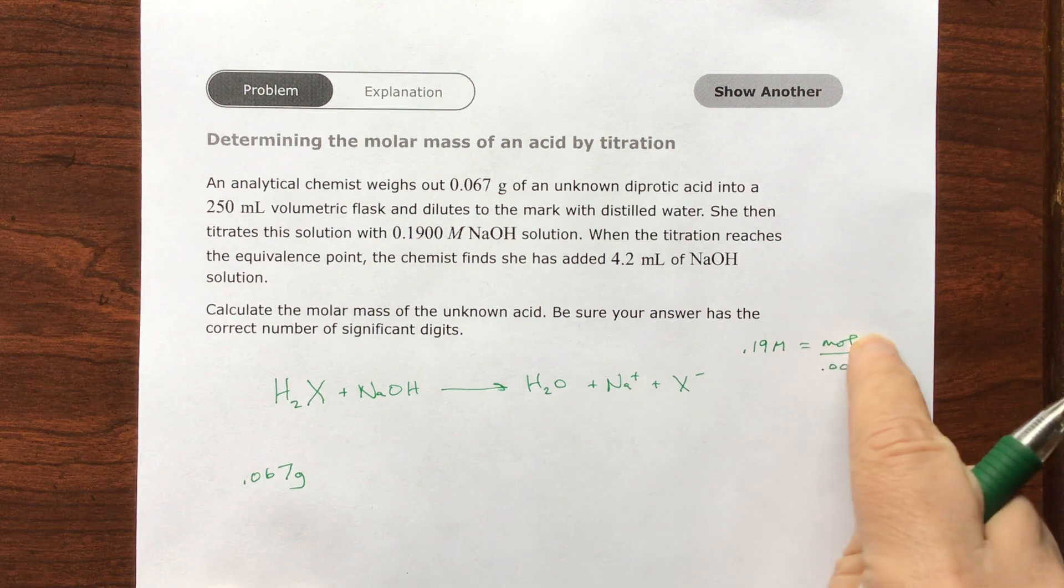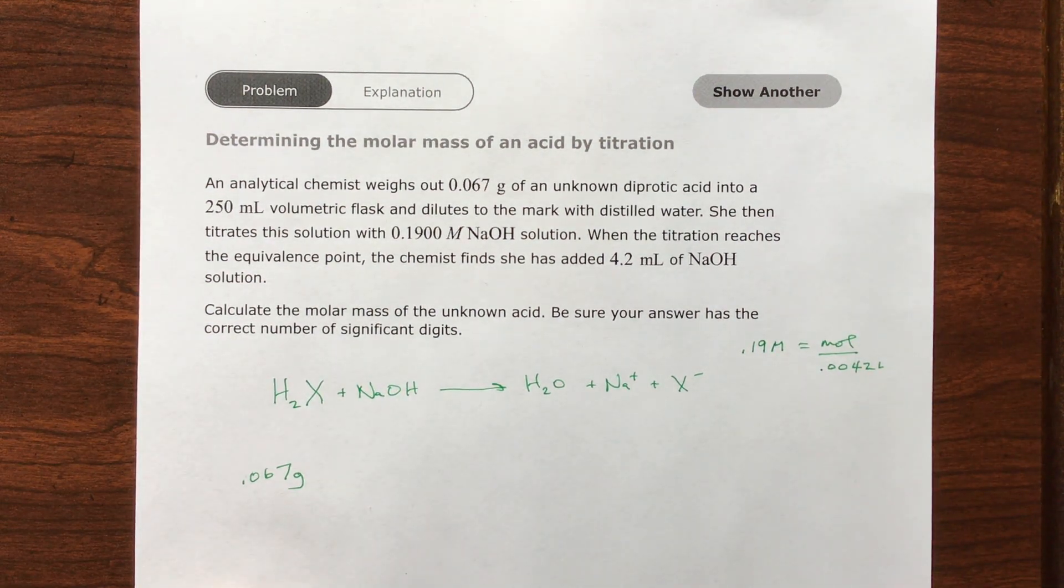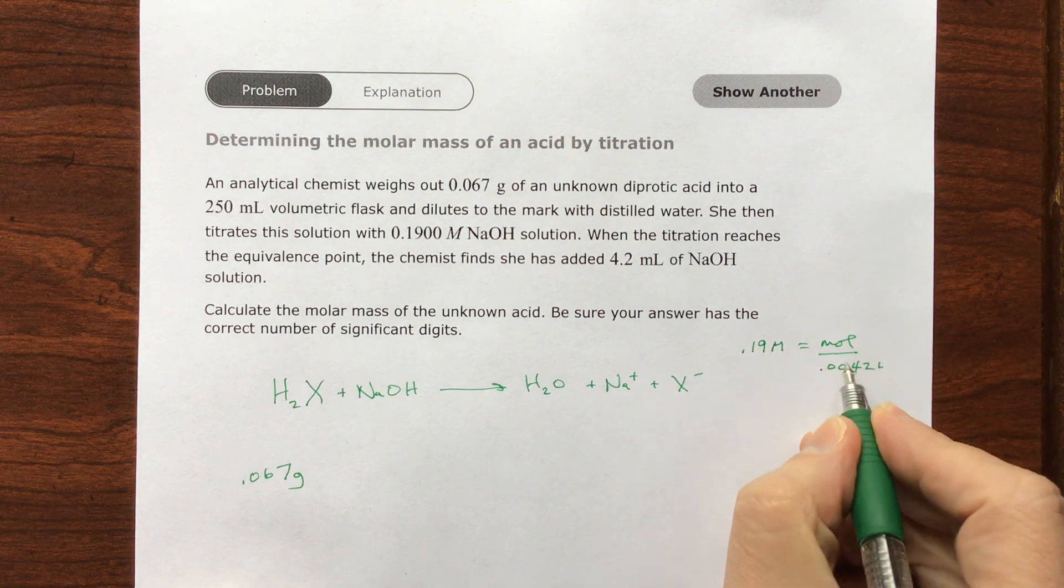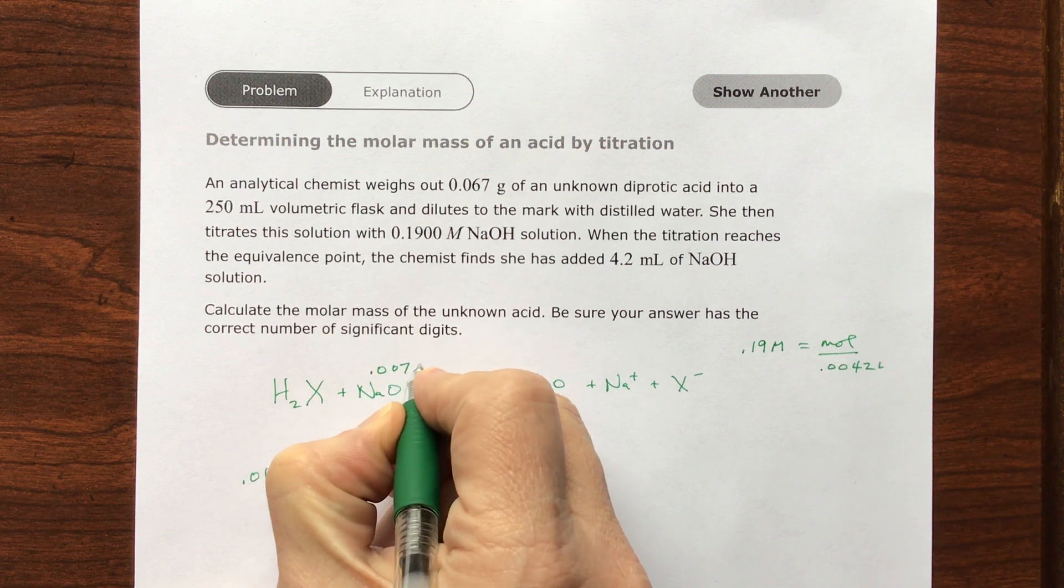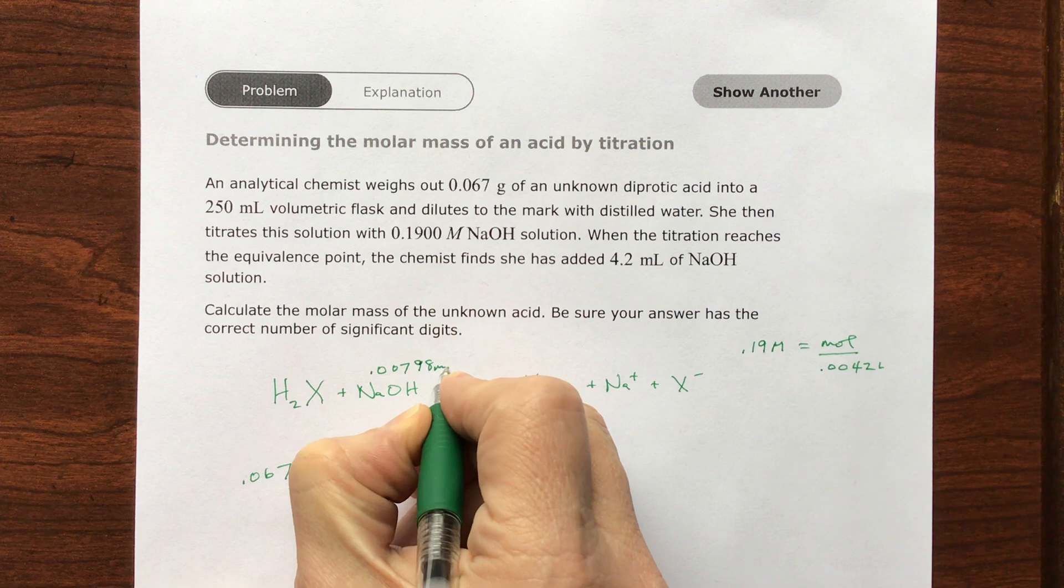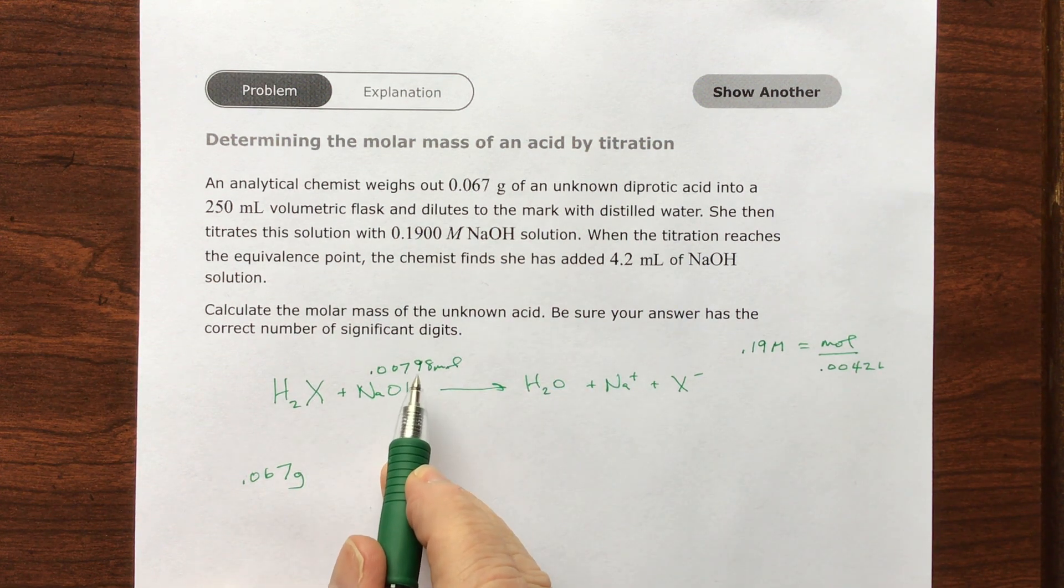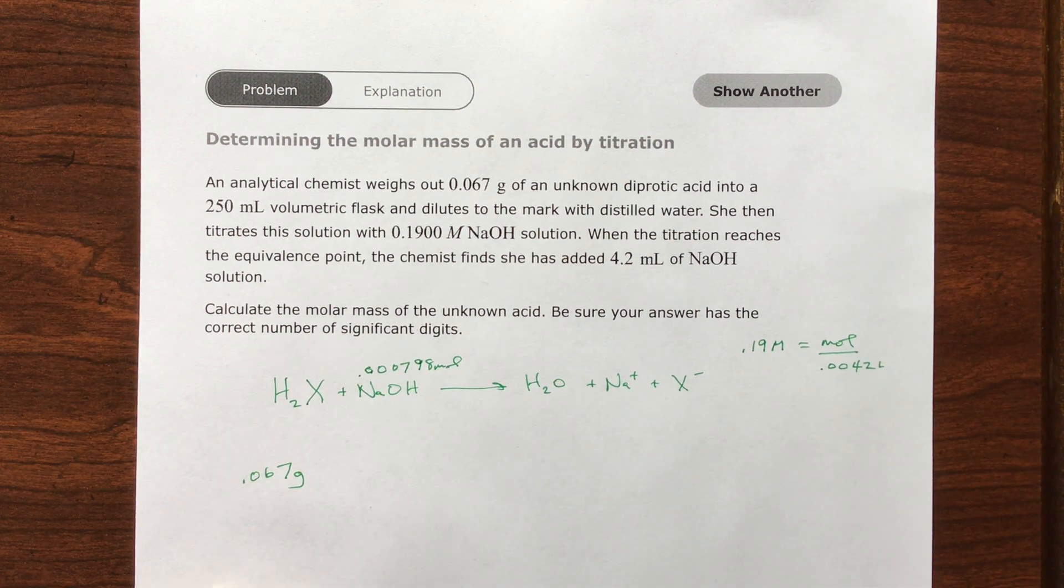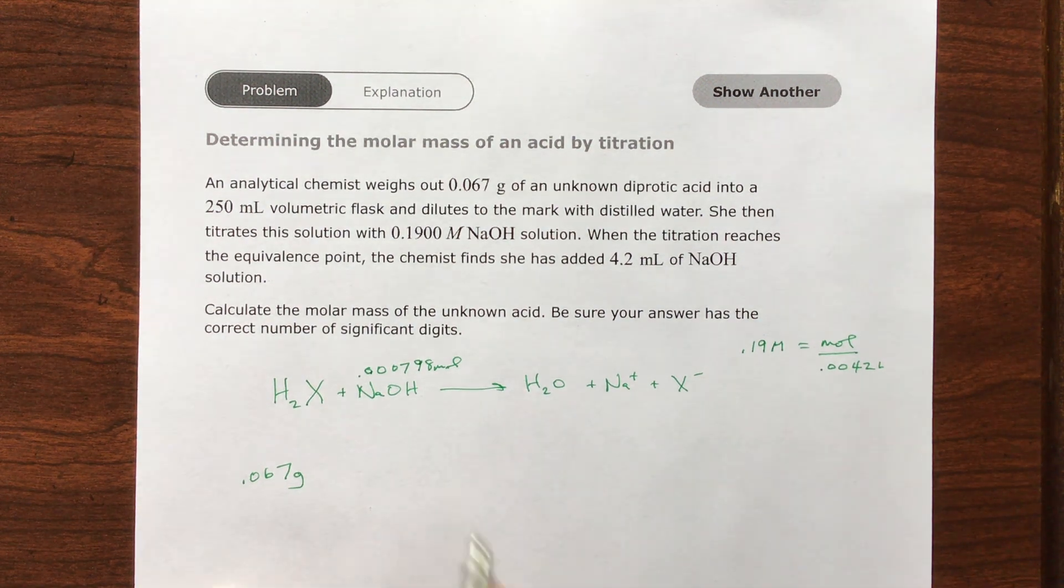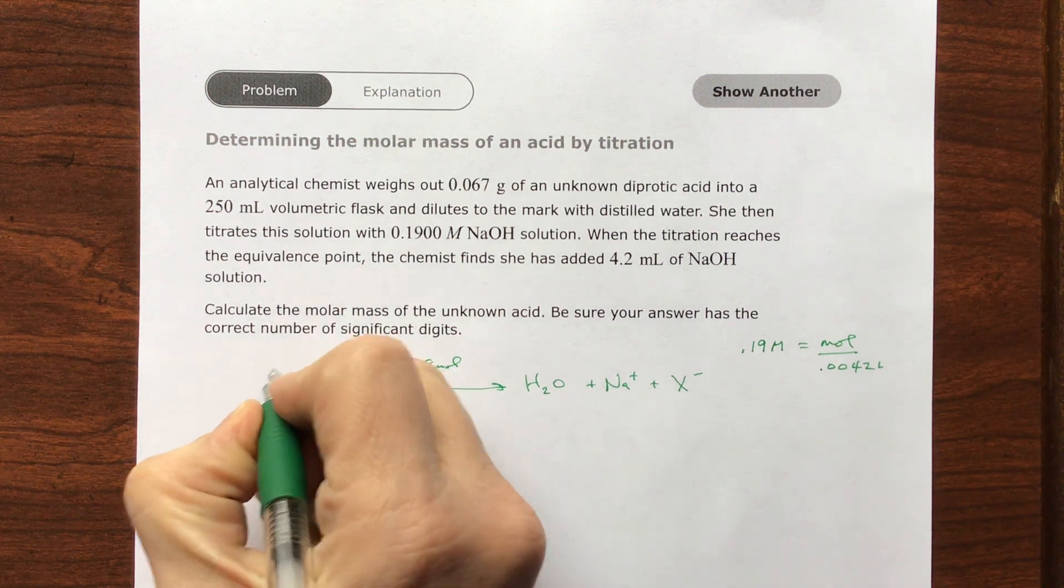So if I have 0.19 molar solution of sodium hydroxide and I have 0.0042 liters of it, then if I multiply, I'll know how many moles of this it is. So that means I'm going to have 0.19 times this, that gives me 0.000798 moles of sodium hydroxide.